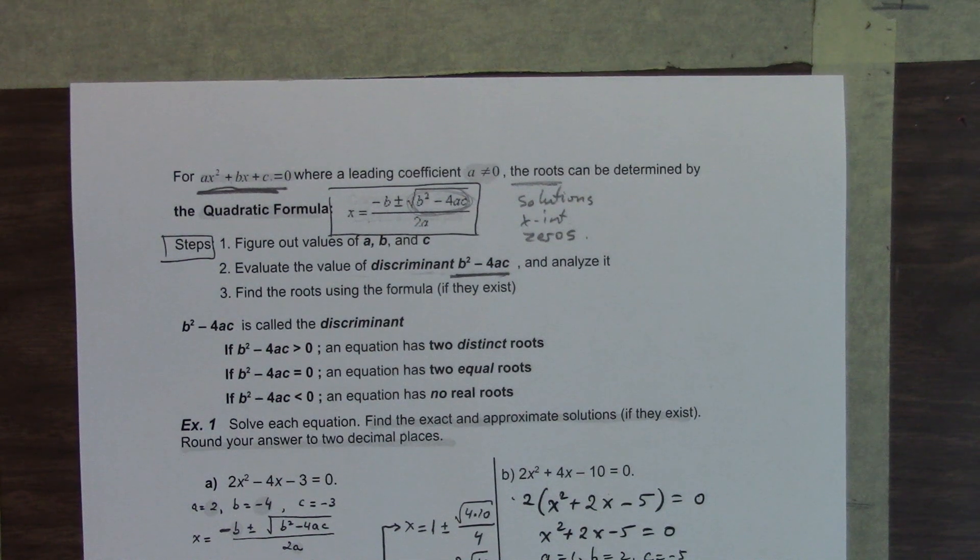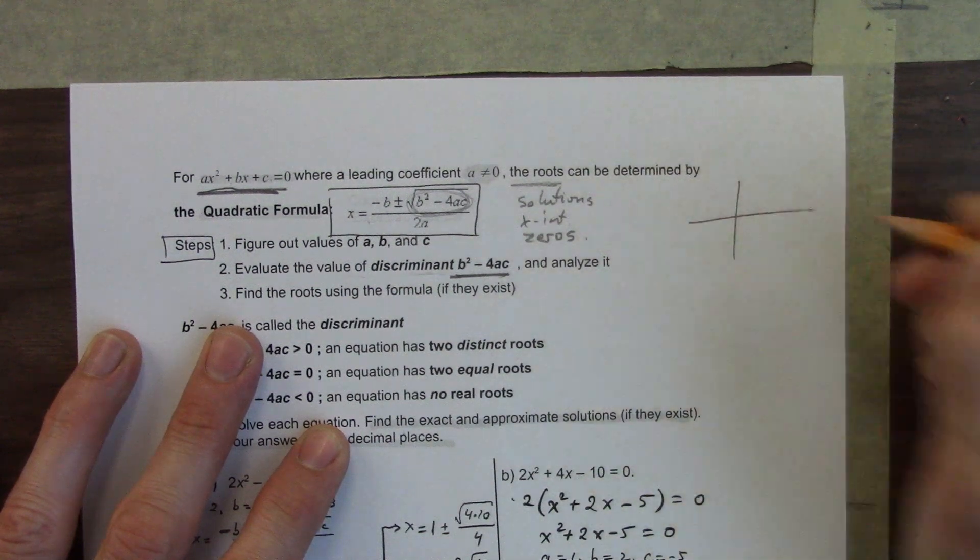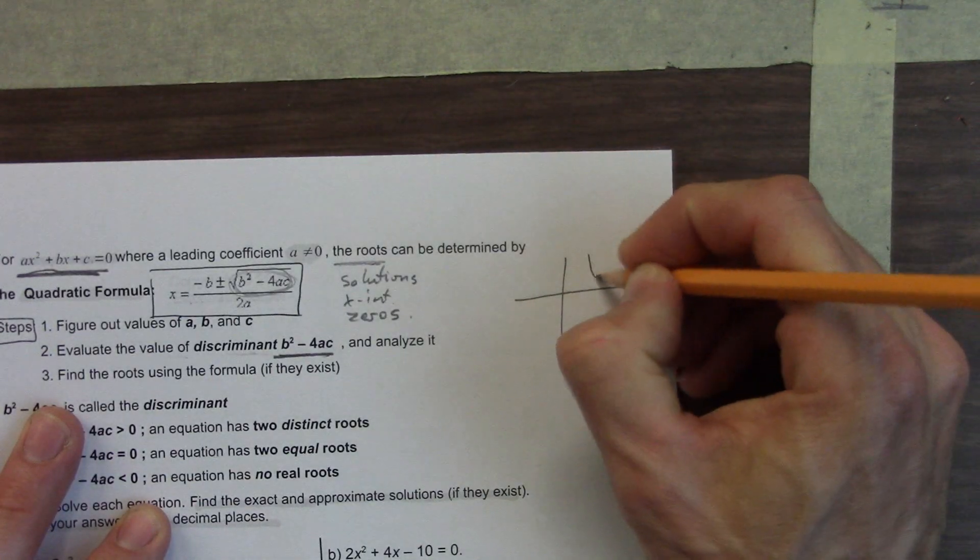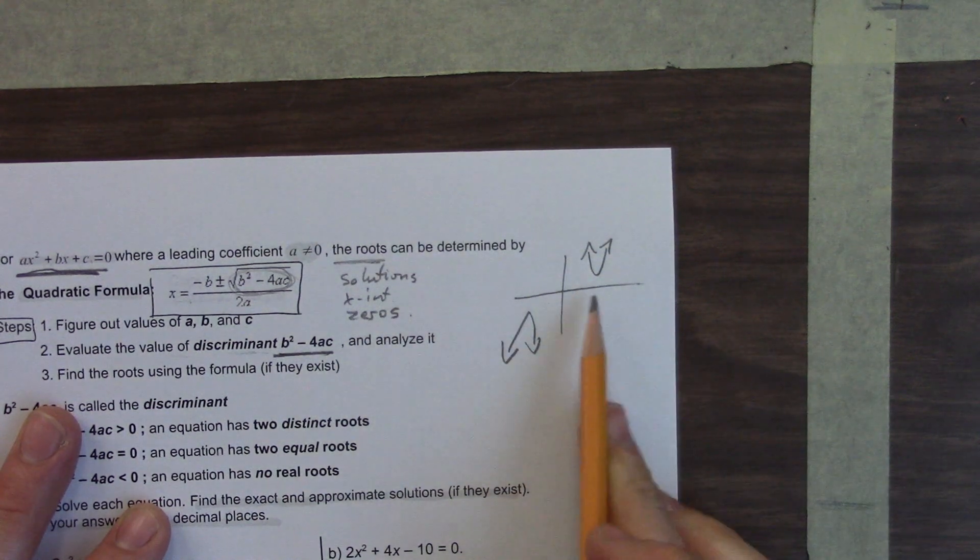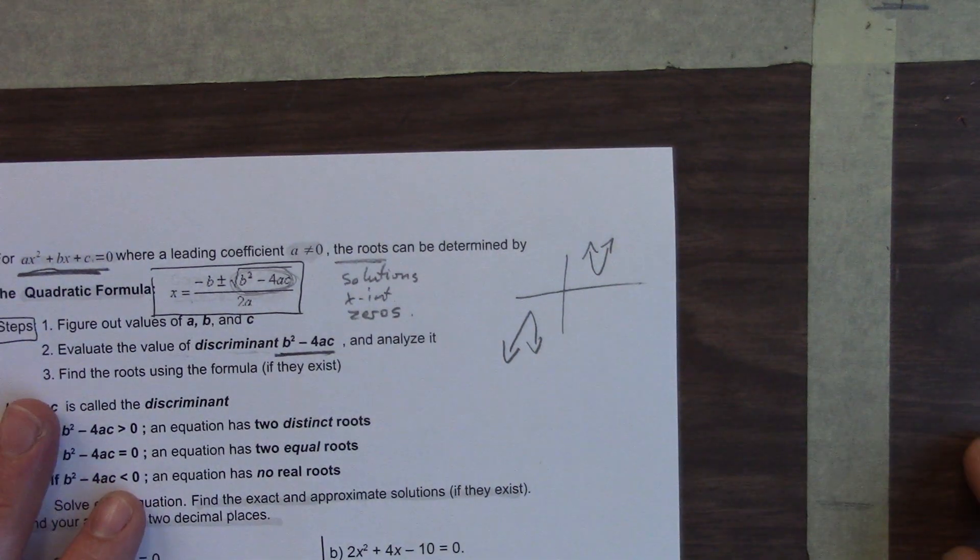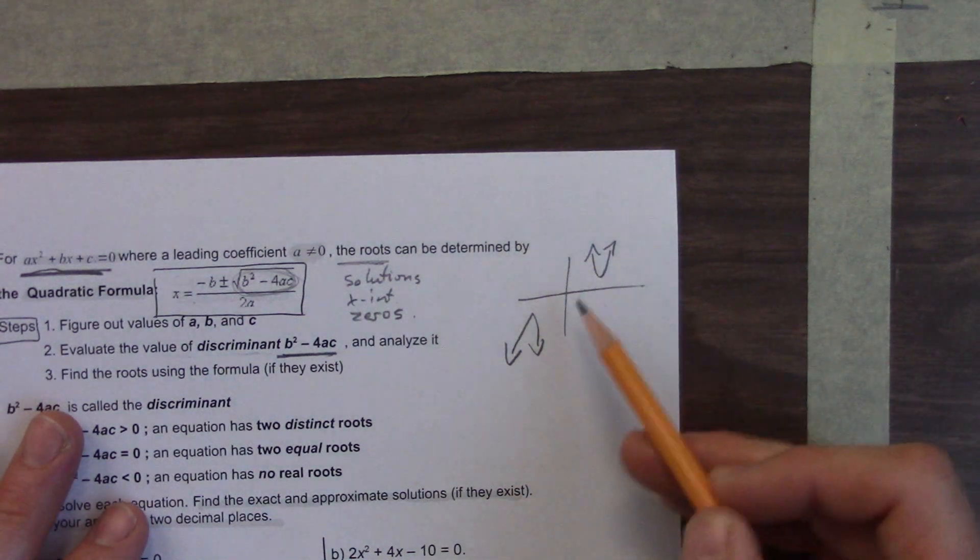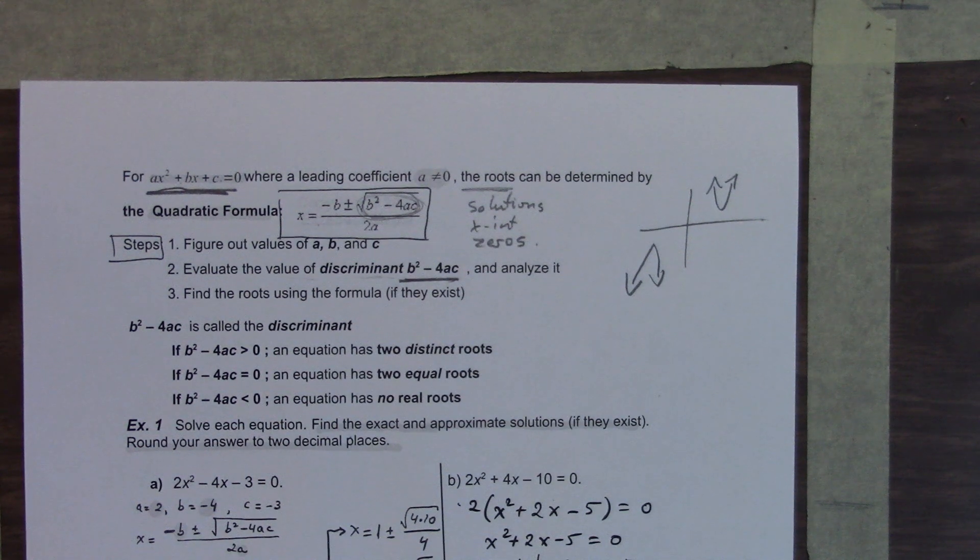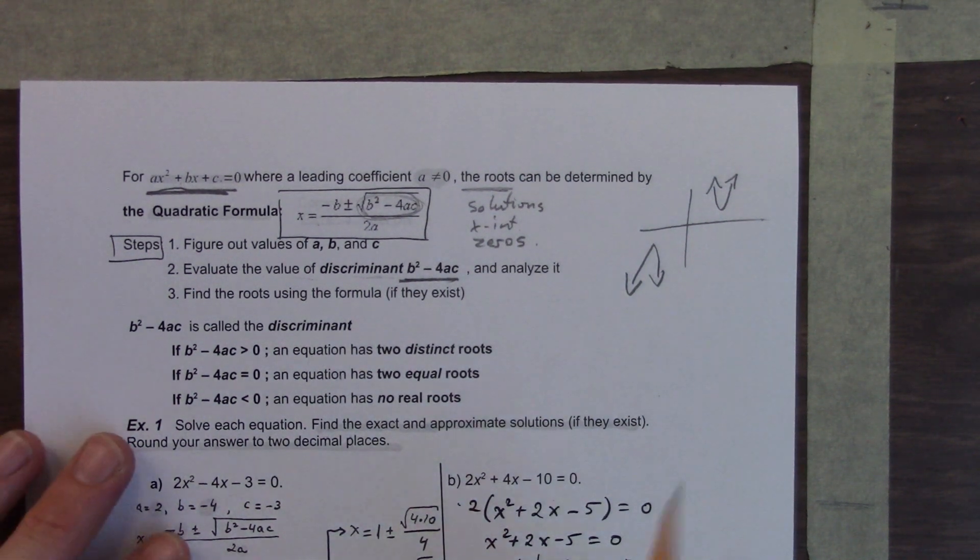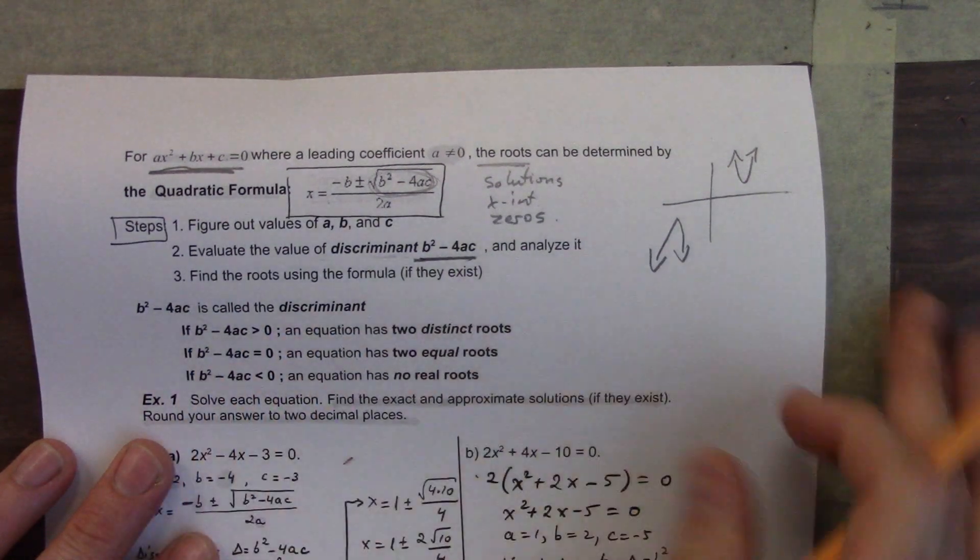Then you're going to evaluate the discriminant. And what the discriminant is, it's the term underneath the square root: b squared minus 4ac. That's what we call the discriminant. And it's important to understand that that value ends up being positive, because if not, you cannot take the square root of a negative number.